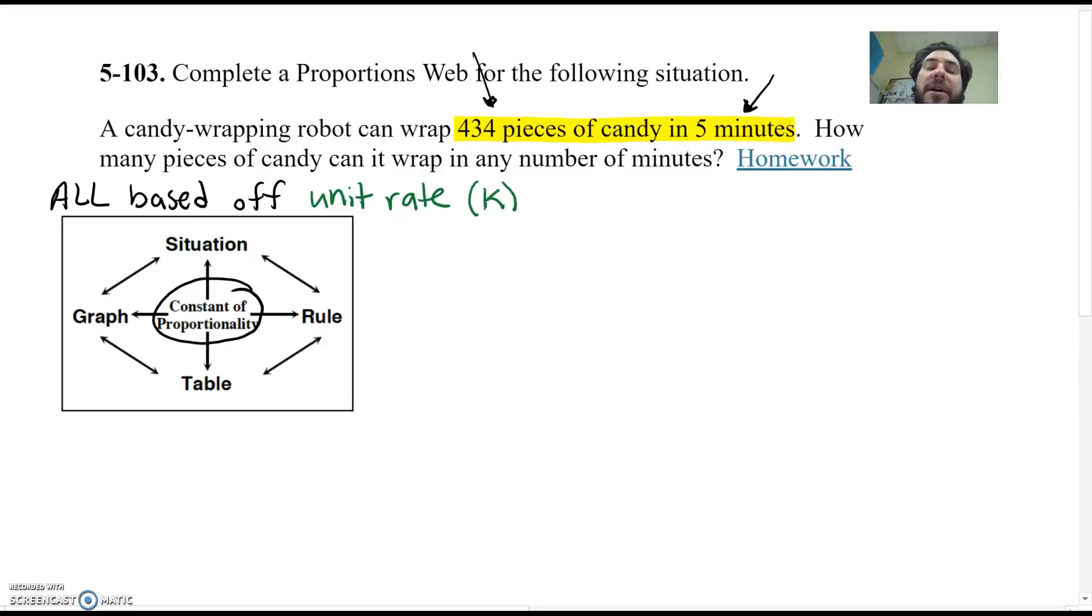And in our case, the constant of proportionality is how many pieces of candy can the robot wrap in not five minutes, but one minute. So it's all based off of a unit rate. So let's find that unit rate of K. So if I know that 434 pieces can be wrapped in five minutes, the question is, well, what's the unit rate? So how much can he wrap in? Let's get this out. In one minute.